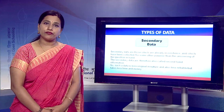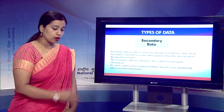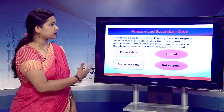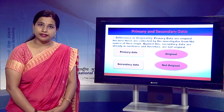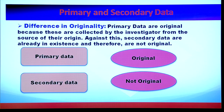We can distinguish between the two concepts on the basis of originality. Primary data are more original in nature than secondary data because primary data are collected by the investigator for the first time from the source of origin. Whereas in case of secondary data, the data already exists and has been collected by some other person.